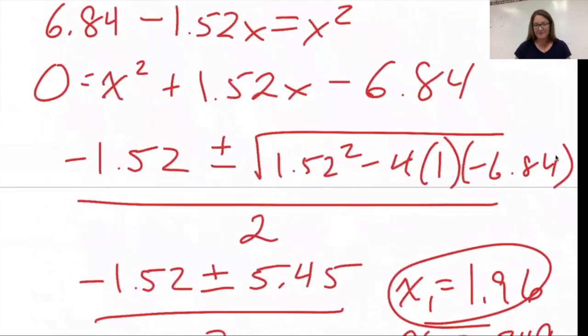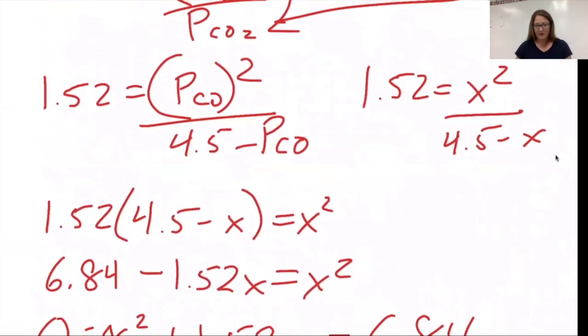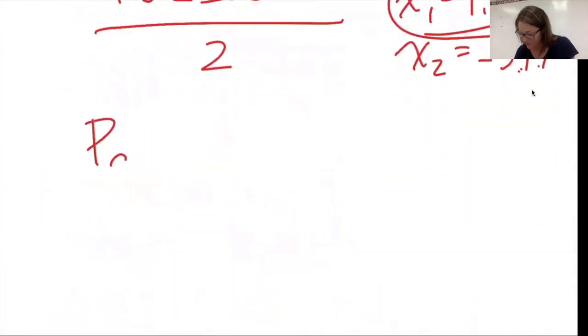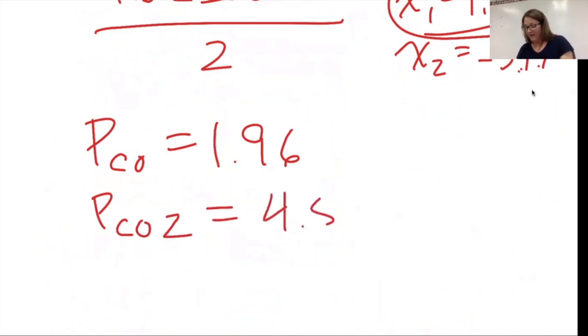I set X up to be equal to the partial pressure of carbon monoxide. So partial pressure of carbon monoxide equals 1.96. The partial pressure of CO2 is going to equal 4.5, the total pressure minus 1.96. 4.5 minus 1.96 gives me 2.54.